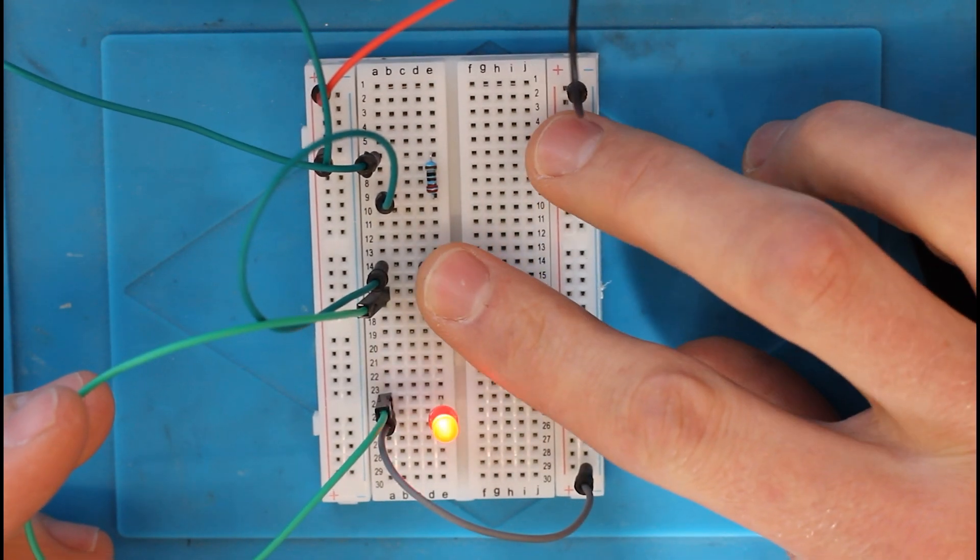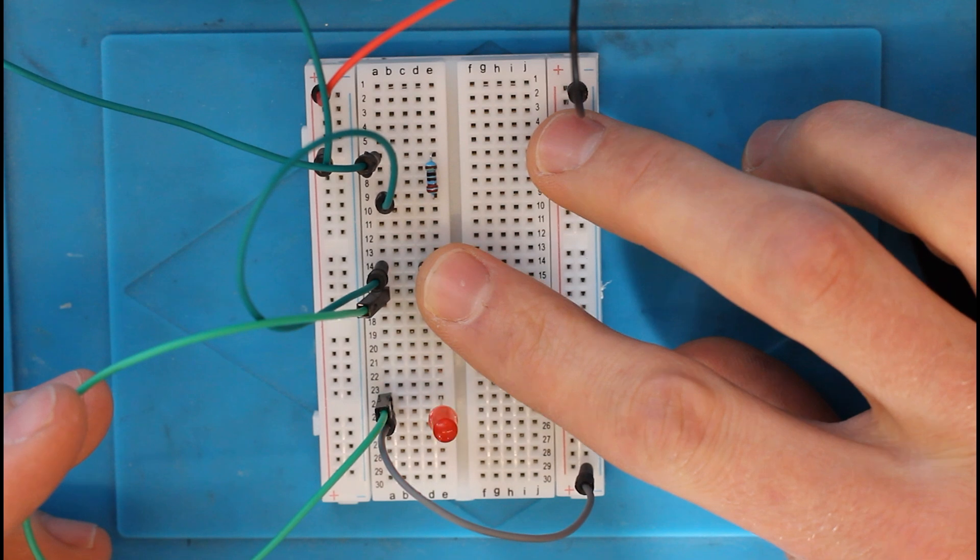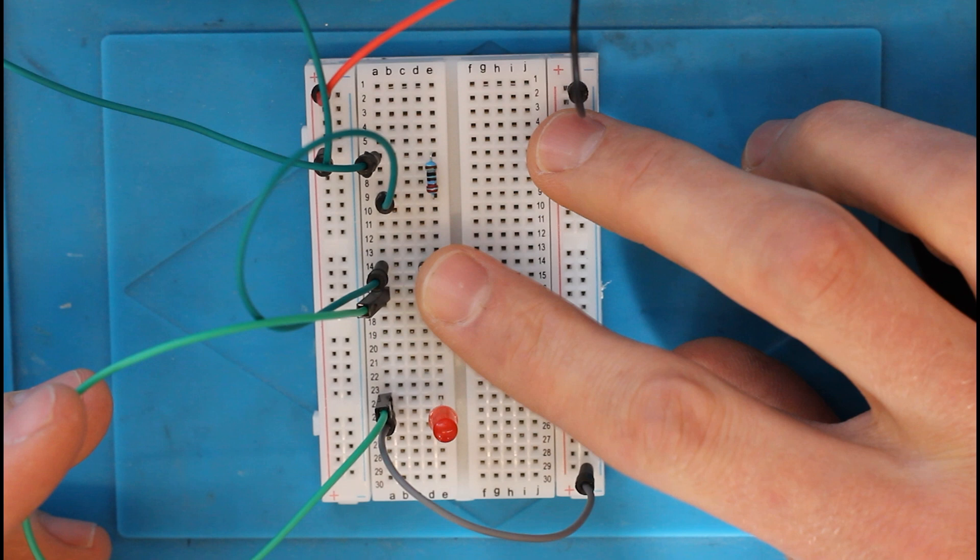And look at that. Push the button and the circuit completes and the light turns on. Release the button and the button returns to its normal state. And the normal state of this push button is open. It is normally open. And an open circuit does not allow electrons to flow through it. So the light turns back off.